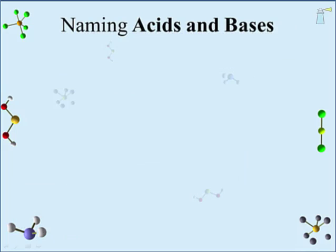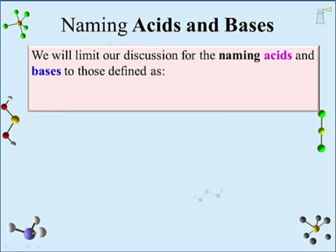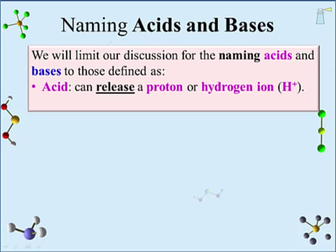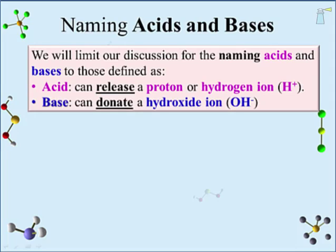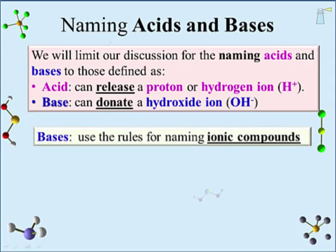The final naming topic is acids and bases. Acids are compounds that can release a proton or hydrogen ion (H⁺); bases are compounds that can donate a hydroxide ion (OH⁻). Hydroxide is a polyatomic ion. Bases use the steps for naming ionic compounds, including the modification for polyatomic anions like hydroxide. Since this naming structure has already been covered, we will not practice naming bases here.